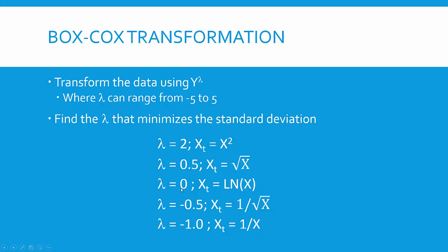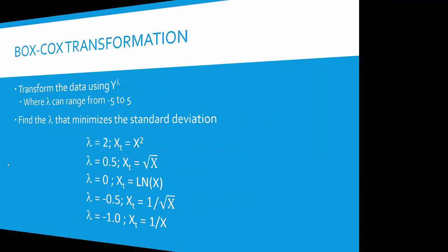Lambda equals 0 is a special case. It's then the ln of x. All the way down, if lambda is minus 1, it'd be 1 over x. But let's take a look at how the program does the Box-Cox transformation.